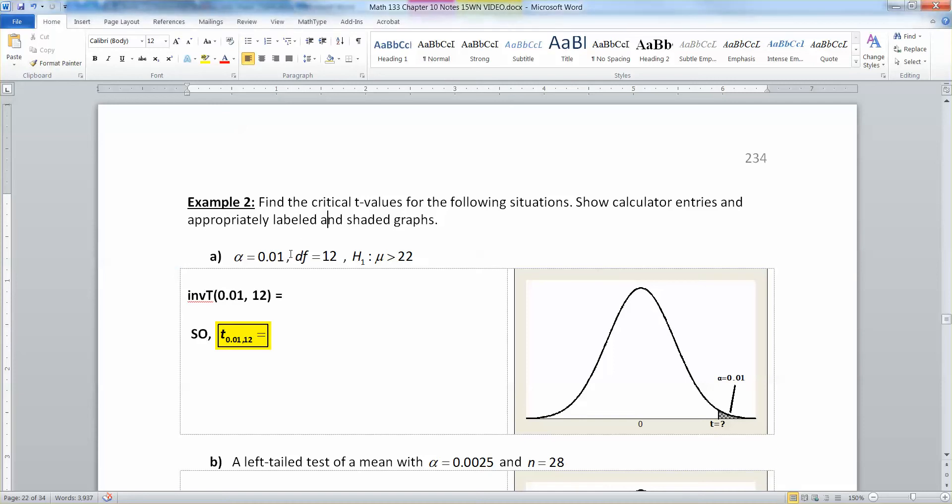We have alpha equal to 0.01. Our degrees of freedom is 12. That was convenient. They told us our degrees of freedom right away. And then they tell us that the alternative hypothesis is that mu is greater than 22. Well, that's intriguing. So mu greater than 22 means we're looking at a right-tailed test.